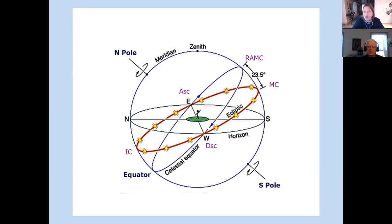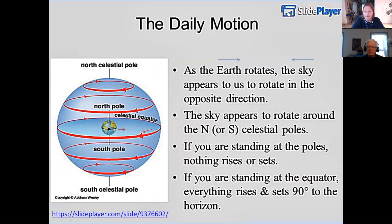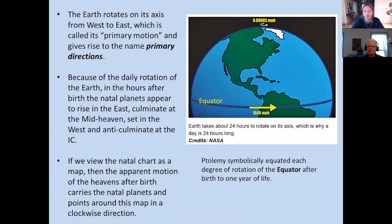That line is going to be very important in how planets arise along the eastern point. As the Earth rotates from west to east, the sky appears to rotate from east to west, and we call that the primary motion of the heavens. At the equator, everything rises and sets at 90 degrees to the horizon. So the Earth rotates west to east, which gives rise to primary directions because the sky appears to rotate from east to west. As points in the sky match up to where points are in the natal chart, we say a primary direction occurs.